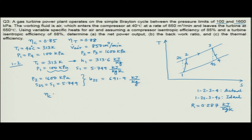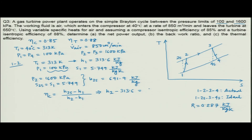Compressor efficiency = (H_2s - H_1) / (H_2 - H_1). So H_2 - H_1 = (H_2s - H_1) / η_c = (691.9 - 313.6) / 0.85. From this, H_2 = 758.6 kJ/kg. That is the enthalpy after the actual compression step.